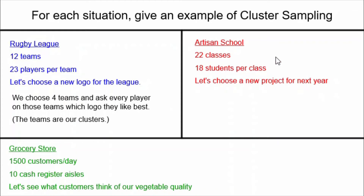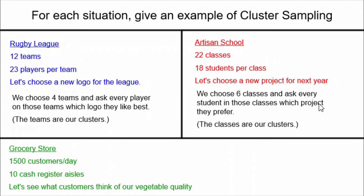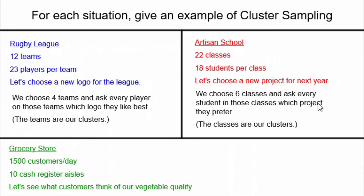The artisan school has 22 classes with 18 students in each class, and they are doing a survey to choose a project for next year. So let's say we choose six of the classes and ask every student in those six classes which project they prefer. That way the classes are our clusters.